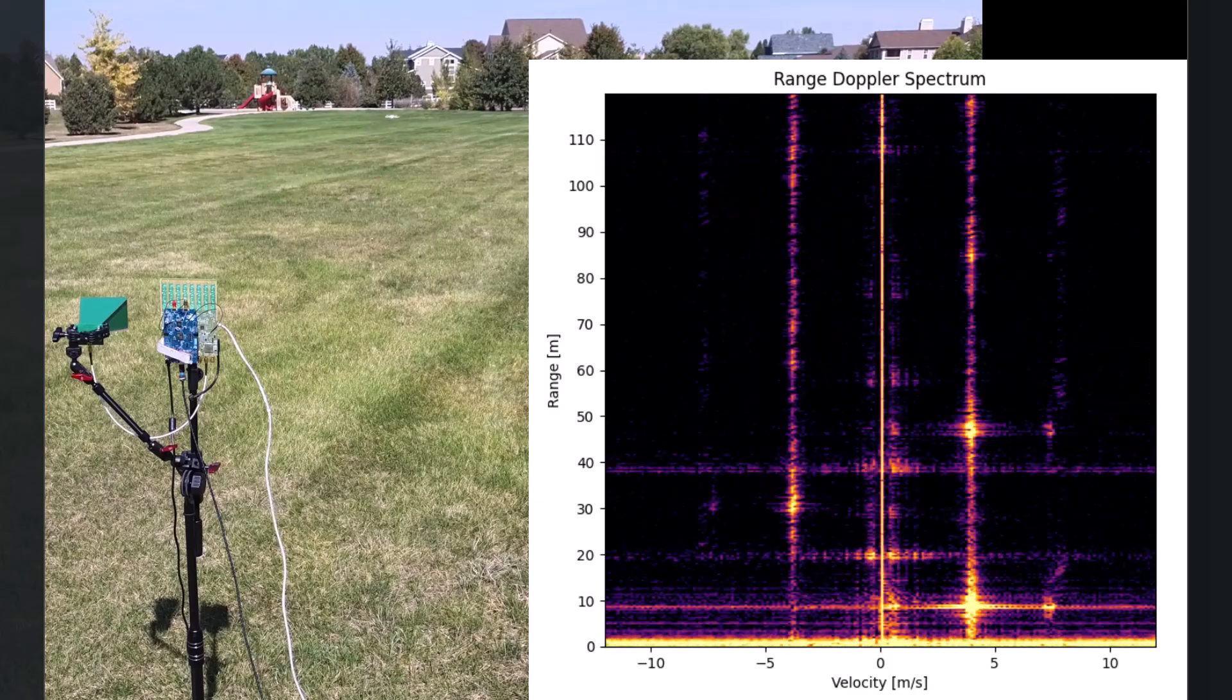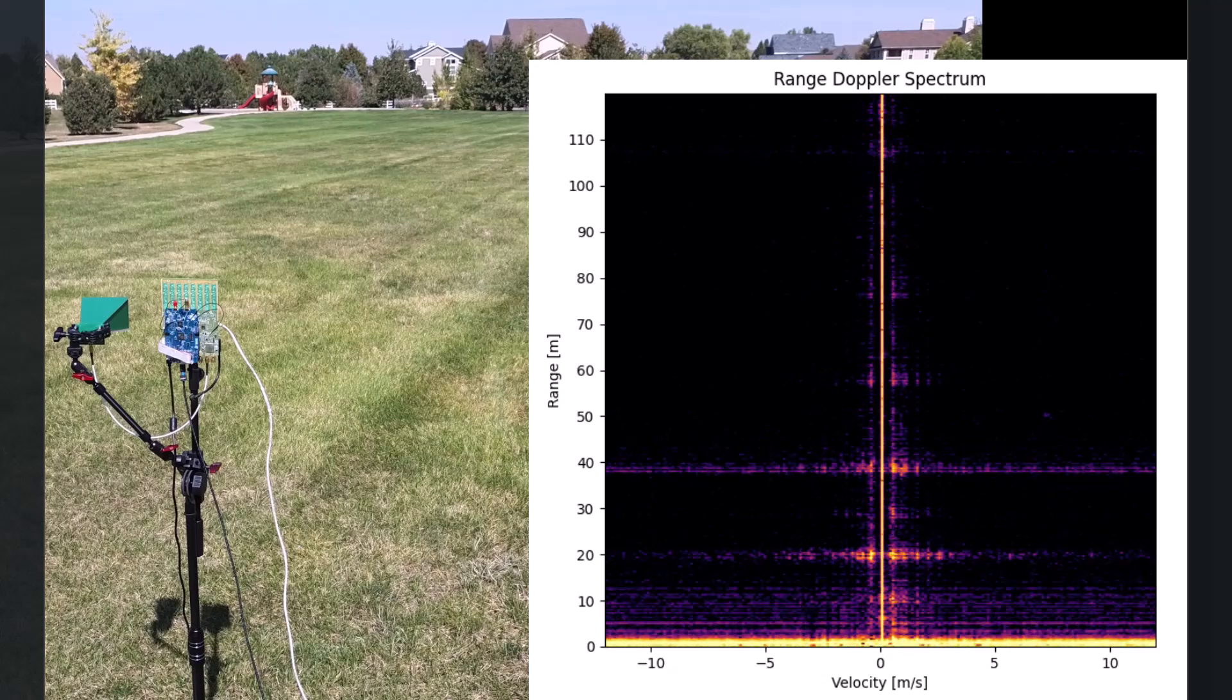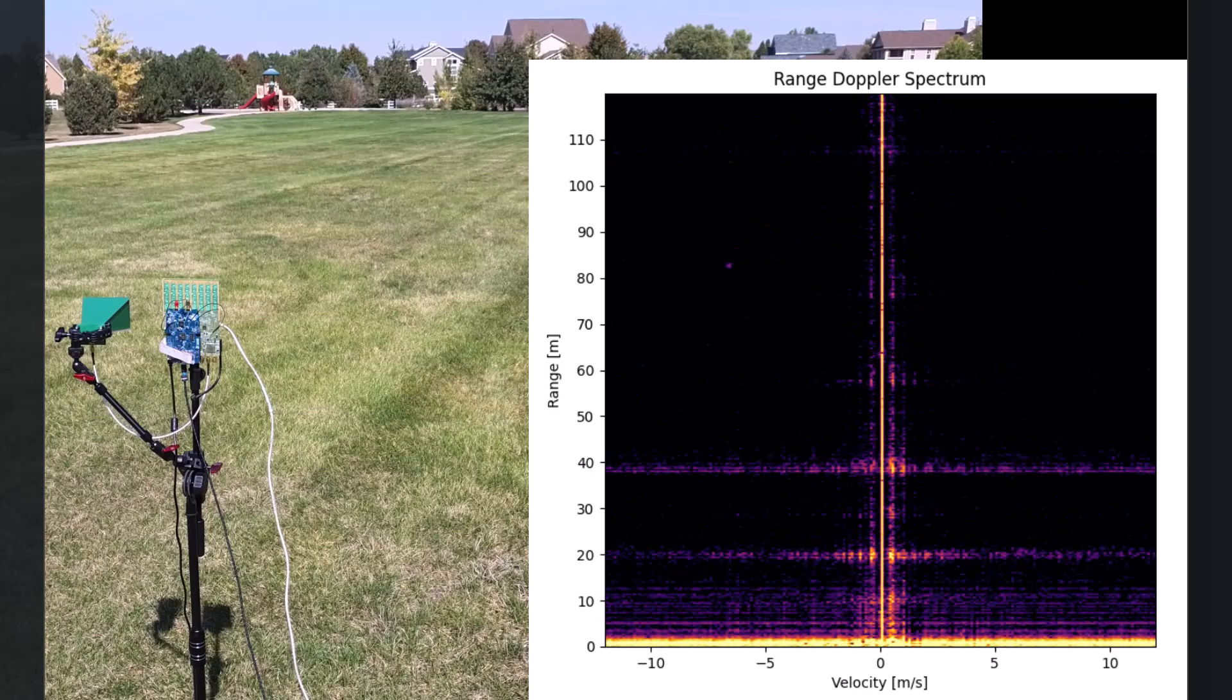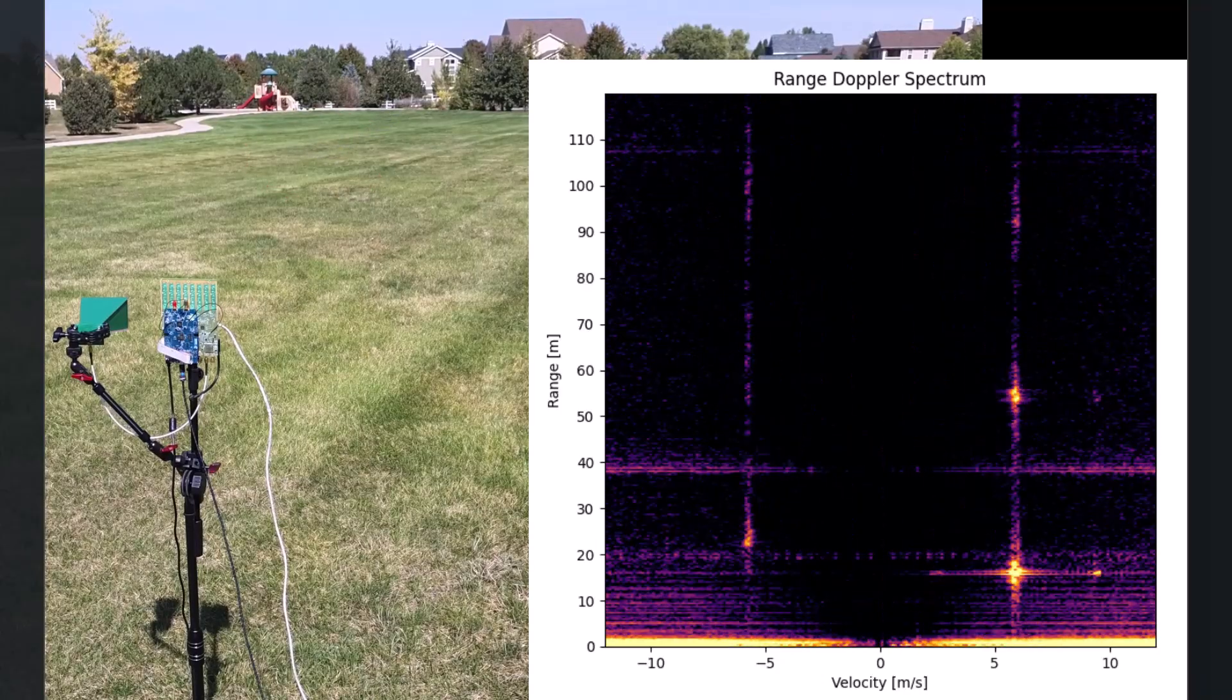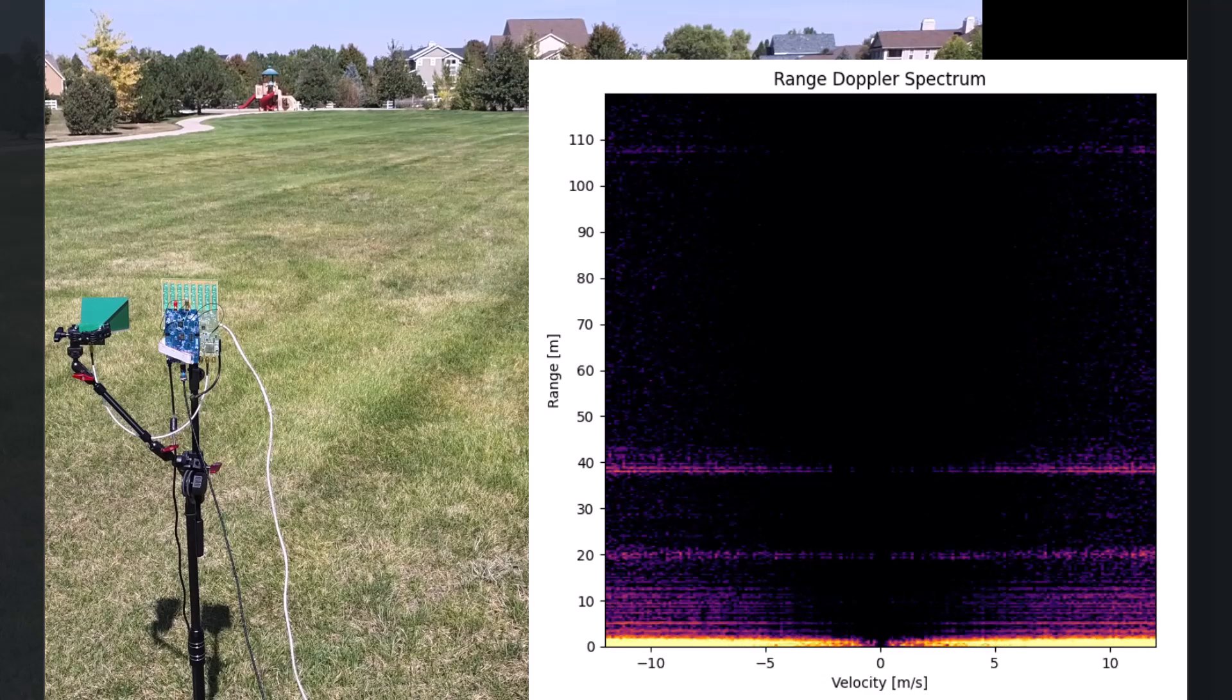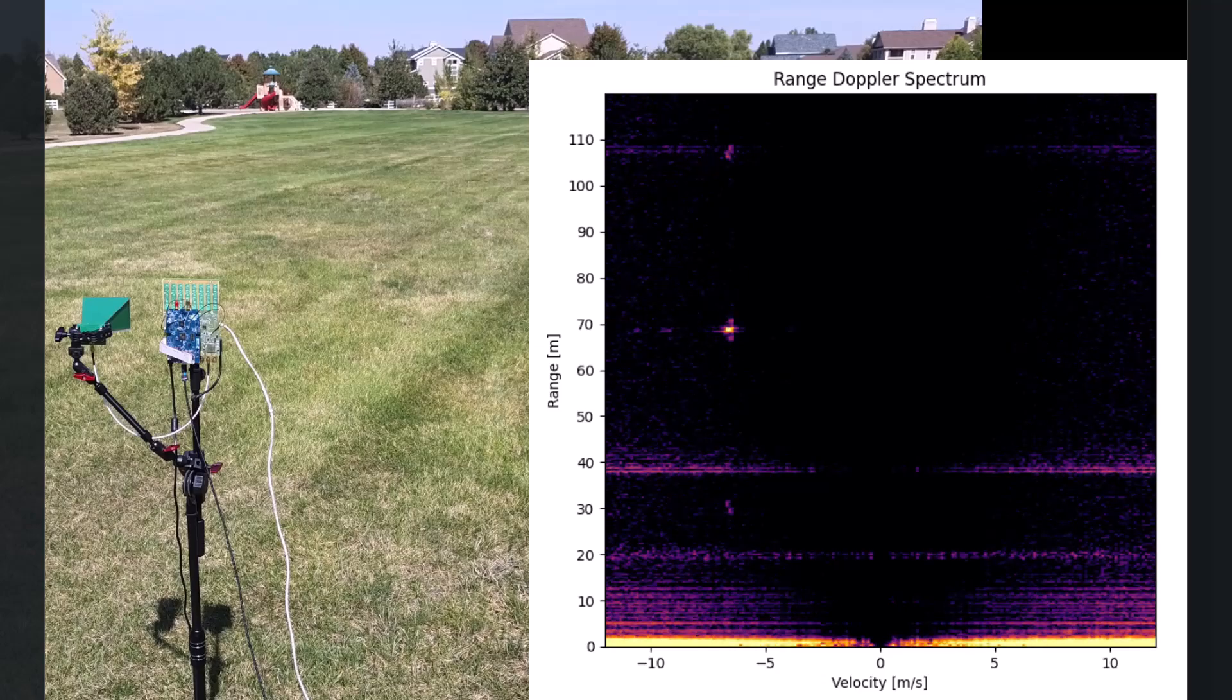I set all this up in the park and here's what the range doppler plots look like with that antenna. And then if we apply a two pulse canceller here's what that looks like. So overall this is pretty decent. You can actually see the drone from about 100 meters away.